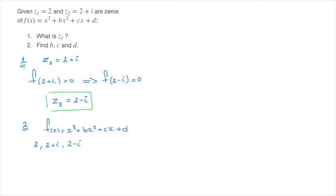we can go ahead and state that f(x) equals (x minus 2), that's the first zero, times (x minus 2 plus i), that's the second zero, times (x minus 2 minus i), that's the third zero.